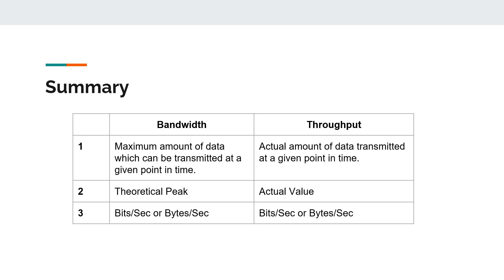We'll have a comparison quickly here. The maximum amount of data that could be transmitted at a given point in time is called bandwidth. The actual data transmitted is called throughput. It's all theoretical. The theoretical peak is called bandwidth. The actual value is called throughput. It can be measured in bits per second or bytes per second, and throughput is no different as well.